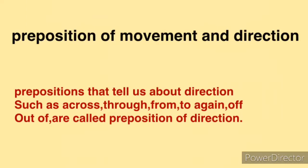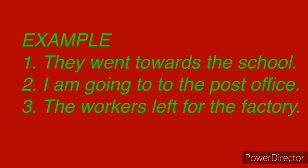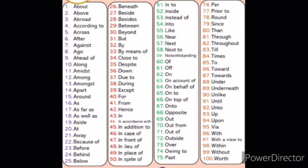Now, prepositions of movement and direction. Prepositions that tell us about direction — such as across, through, from, to, off, out of — are called prepositions of direction. Examples: 'They went towards the school' — here 'towards' is showing the movement. 'I am going to the post office' — here 'to' is showing movement and direction. 'The workers left for the factory' — here 'for' is showing the preposition of movement and direction.